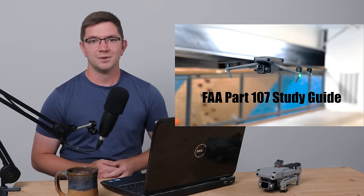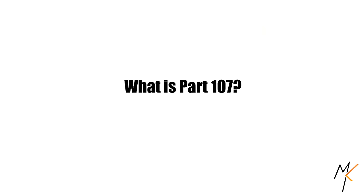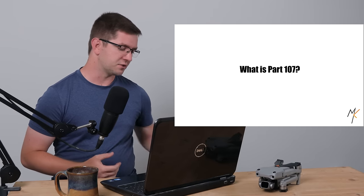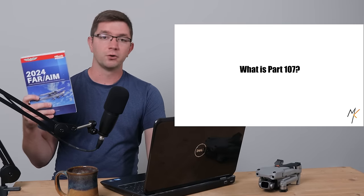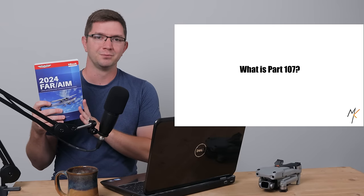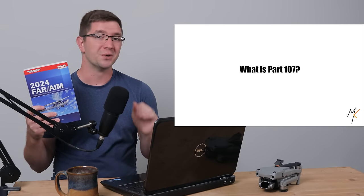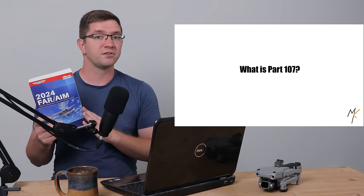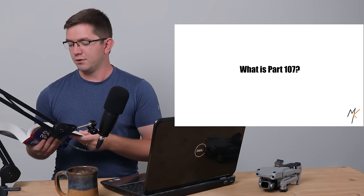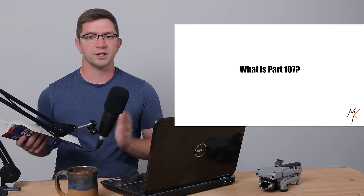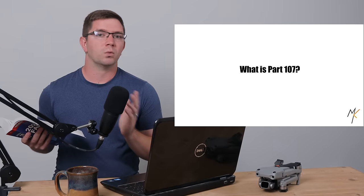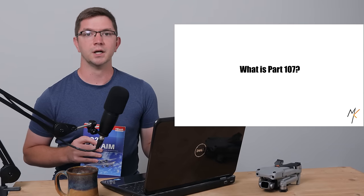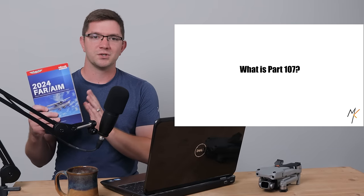Let's dive right into it. What is Part 107 and why is it called this? The FAA — the Federal Aviation Administration — has a book called the FAR/AIM, the Federal Aviation Regulations and Aeronautical Information Manual. There are a ton of acronyms in aviation, so just bear with me throughout the video. This book contains all the rules and regulations the FAA implements. If you scroll through its pages, you will find 14 CFR Part 107, which contains all the rules and regulations pertaining to unmanned aircraft systems — what we call drones. So whenever we talk about rules and regulations for drones, we are simply referring to the topic labeled Part 107.